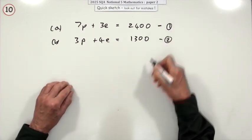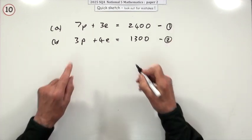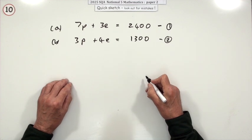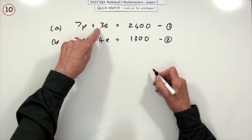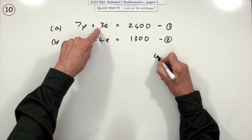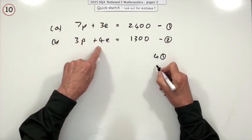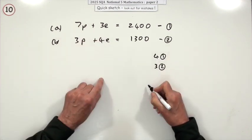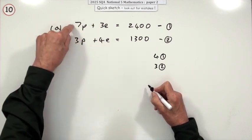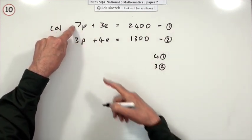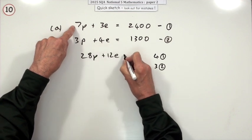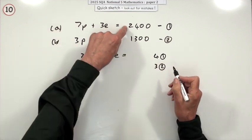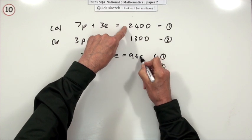So I'll give them names, one and two. What I'm going to do is change them and add them up. So my plan will be, well the e's would be easier. I'm going to take four of equation one and three of equation two to get the same number of e's. So multiply equation one by four. It'll be 28p plus 12e equals 9,600.